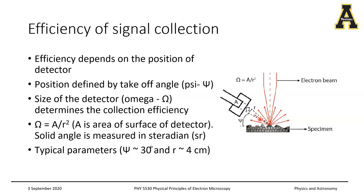Now let's look at the efficiency of signal collection. The tip of the ET detector is positioned at a takeoff angle psi, and the size of the detector is defined by omega, the solid angle subtended from the specimen. If the detector has area A and is placed at distance r, the solid angle is A/r² measured in steradians. Typically in an electron microscope with psi of 30 degrees and r of 4 centimeters, you get a pretty good collection of secondary electrons.